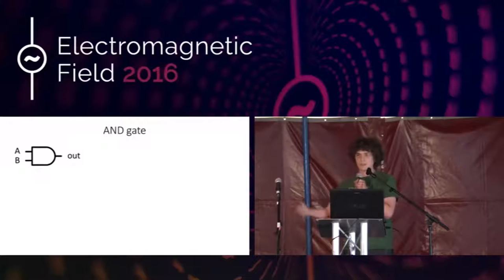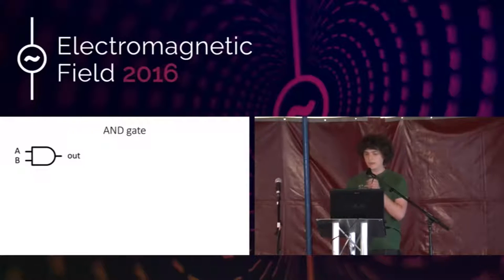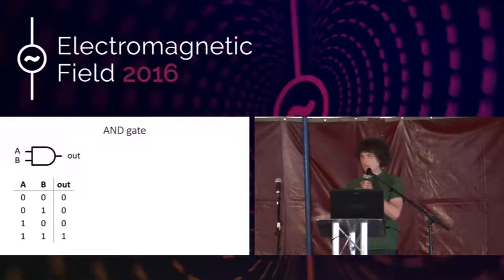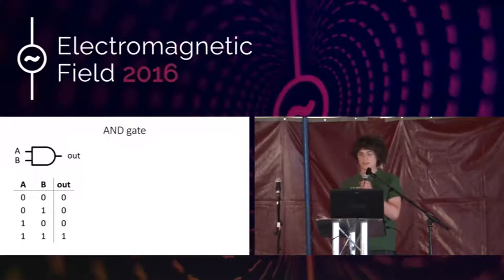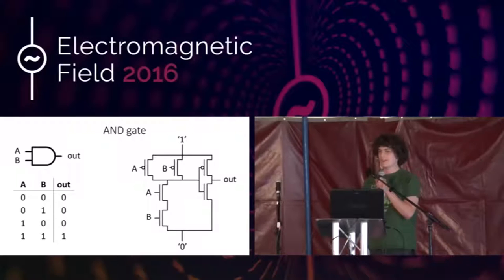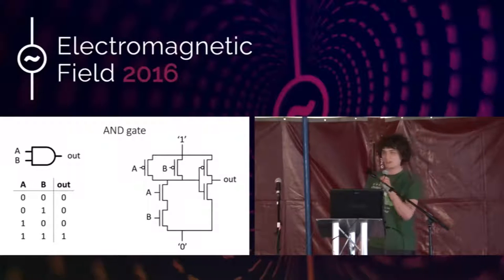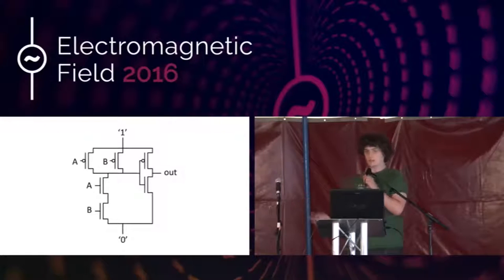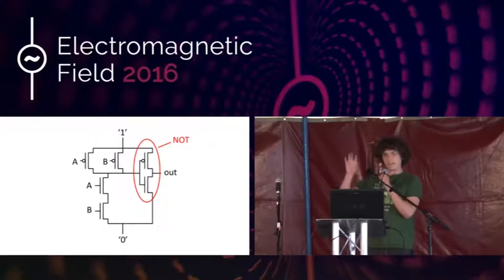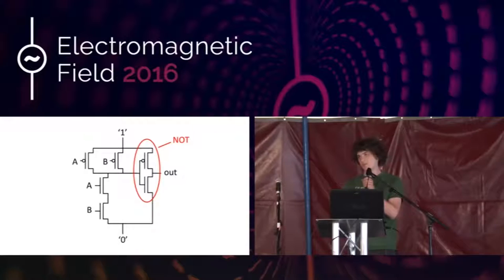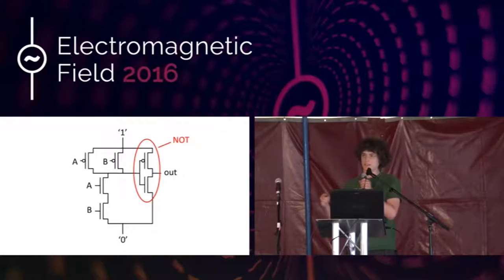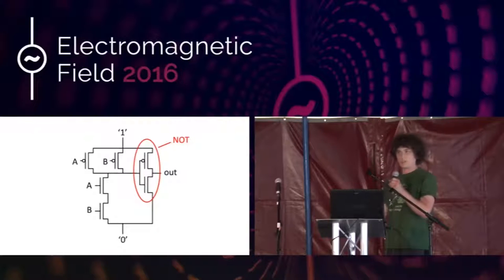The next gate is the AND gate — a bit more complicated. It has two inputs, A and B, and it only makes the output one when both inputs are one; in all other cases, it's zero. How do we make this with transistors? If we look closely at the circuit, near the output you see two transistors arranged exactly like the NOT gate on the previous slide. That means at the input of that NOT gate should be the exact opposite signal as at the output of the AND gate. So if we take away those two transistors, we have a simpler circuit we can check to see if it does what we want.